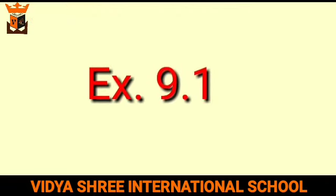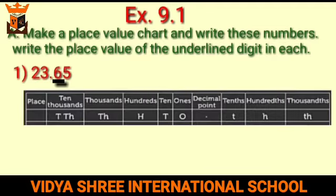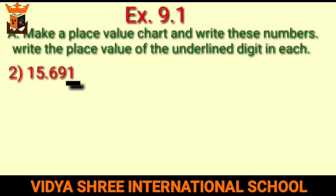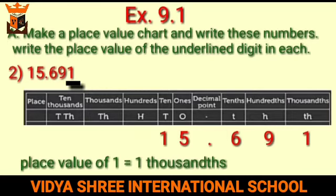Now let us try some questions from exercise 9.1. First question: make a place value chart and write the place value of the underlined digit in each number. For 23.65: place 2 under tens, 3 under ones, 6 under tenths, and 5 under hundredths. The place value of 6 is 6 tenths. For 15.691: after placing in the place value chart, the place value of 1 is 1 thousandth.